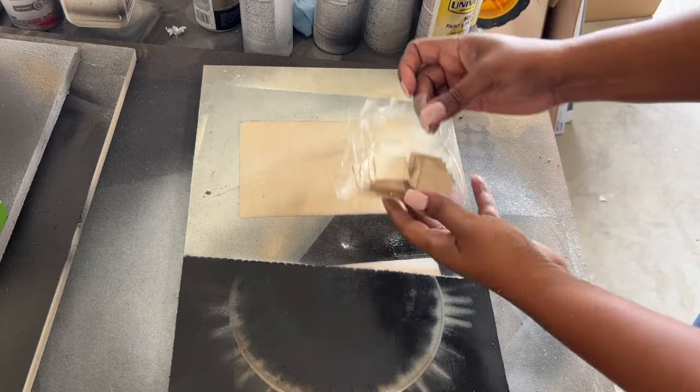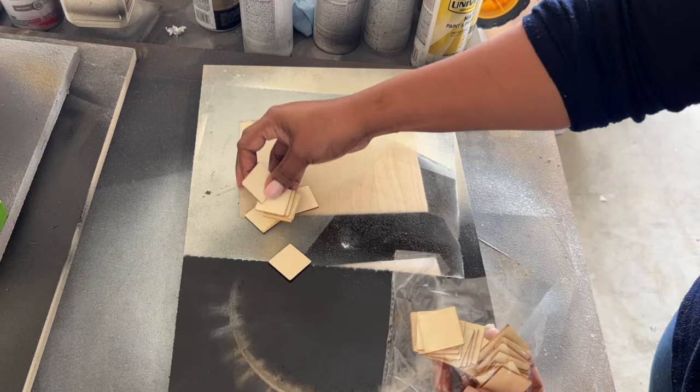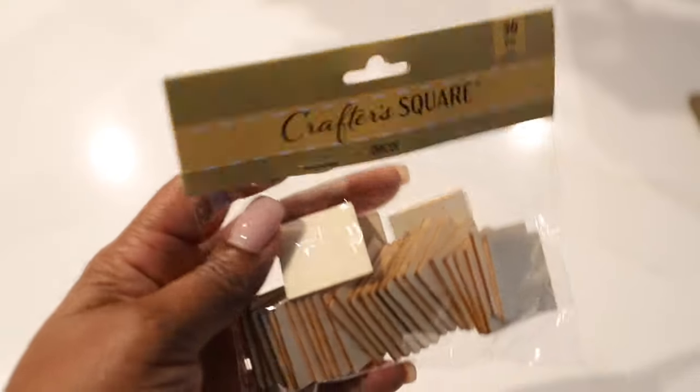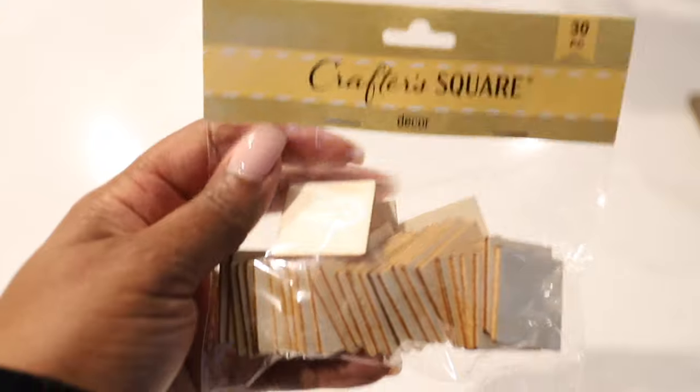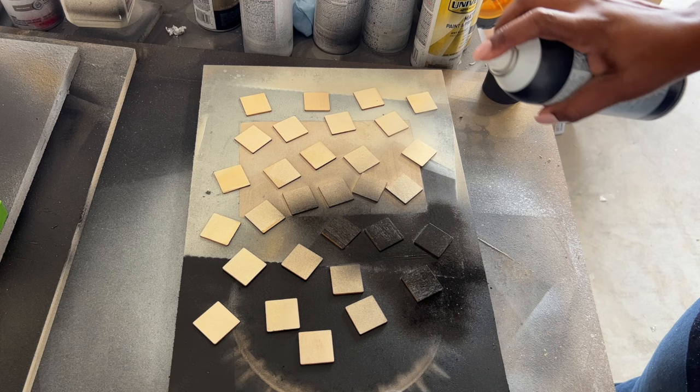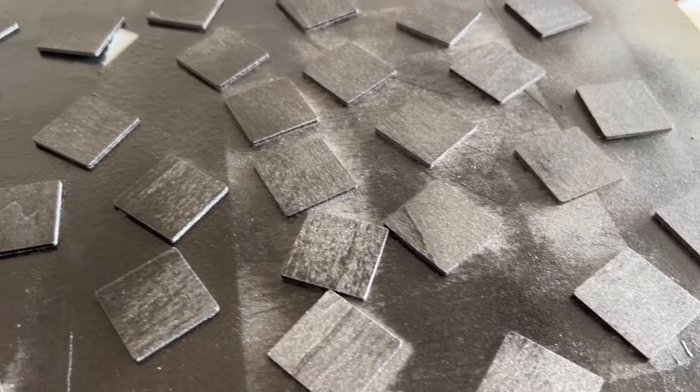To add some interest to the vase, I decided to spray paint these squares and see if I could attach them to the vase somehow. The squares were also $1.25 and they come in a pack of 30. Afterwards, I let them dry for an hour.